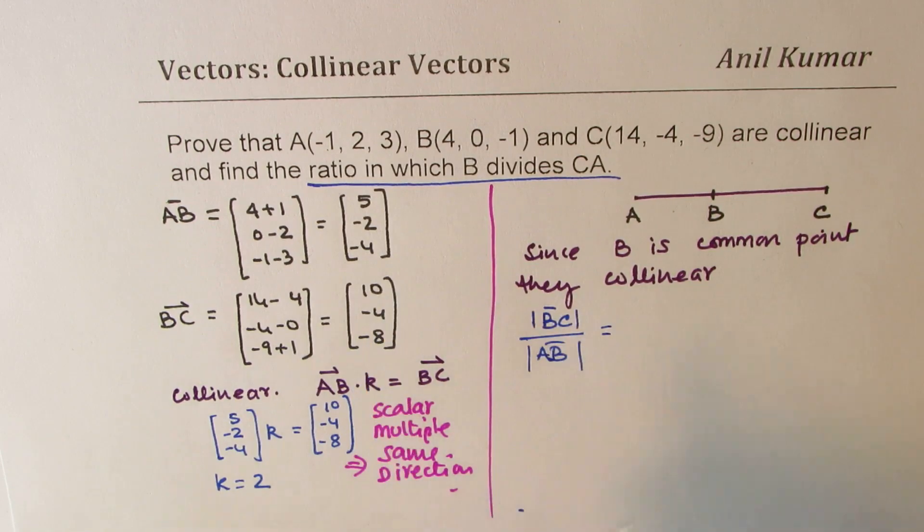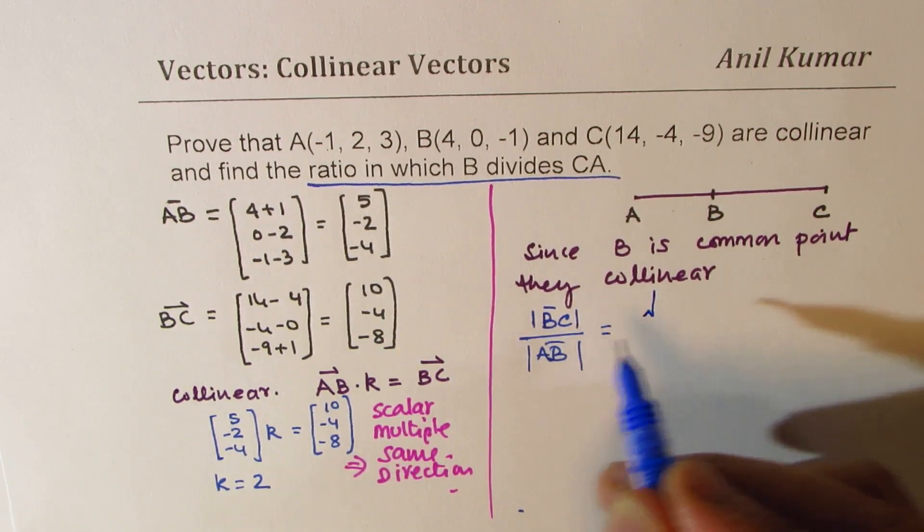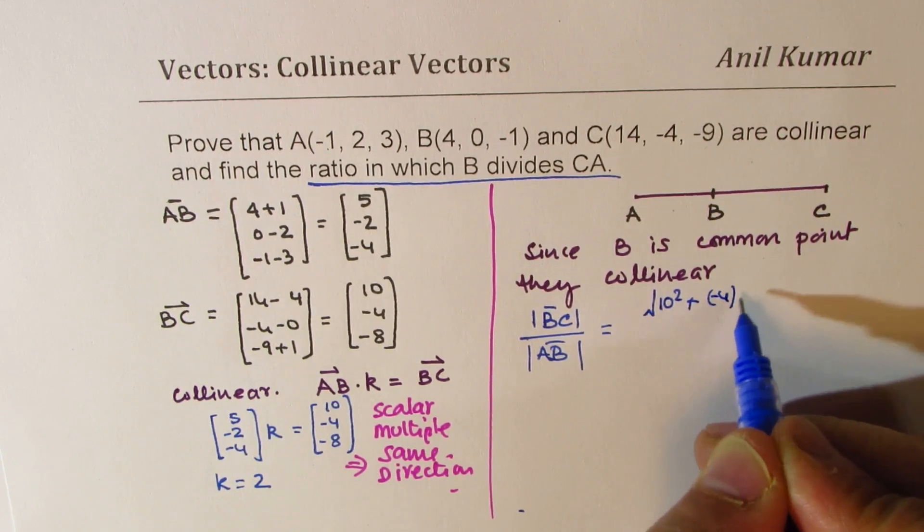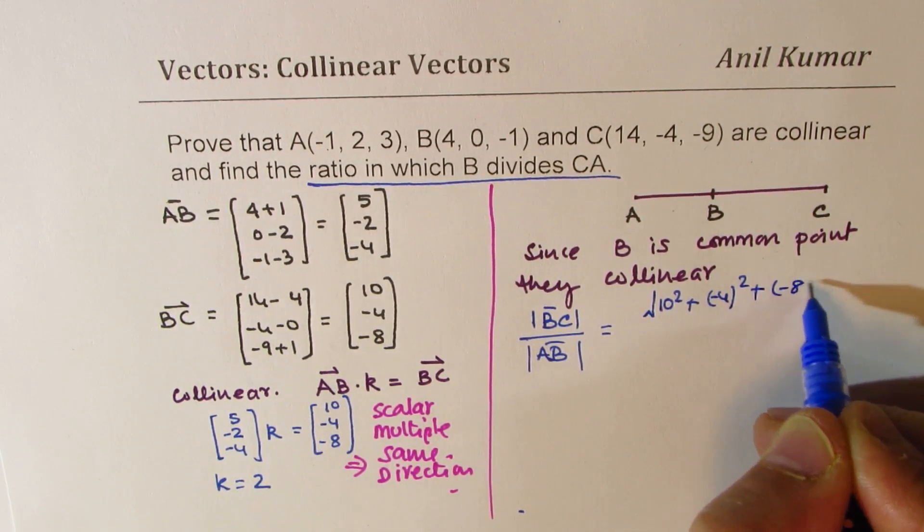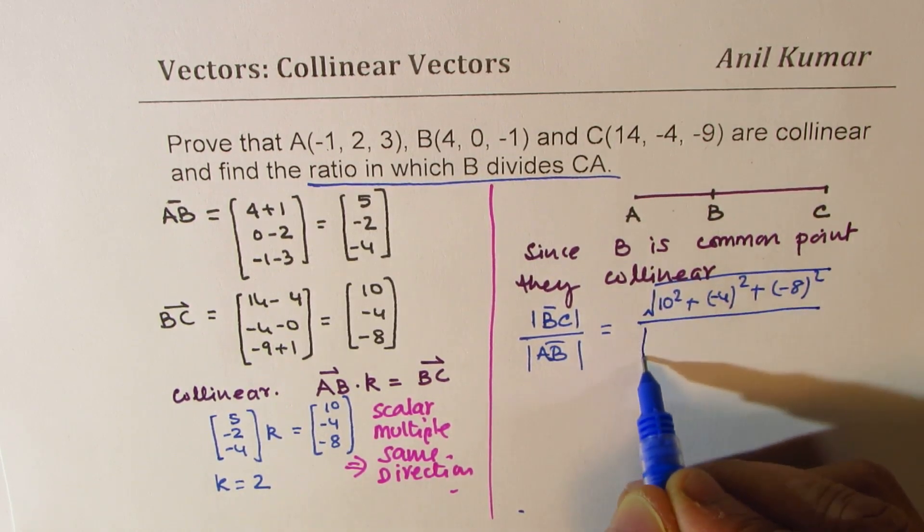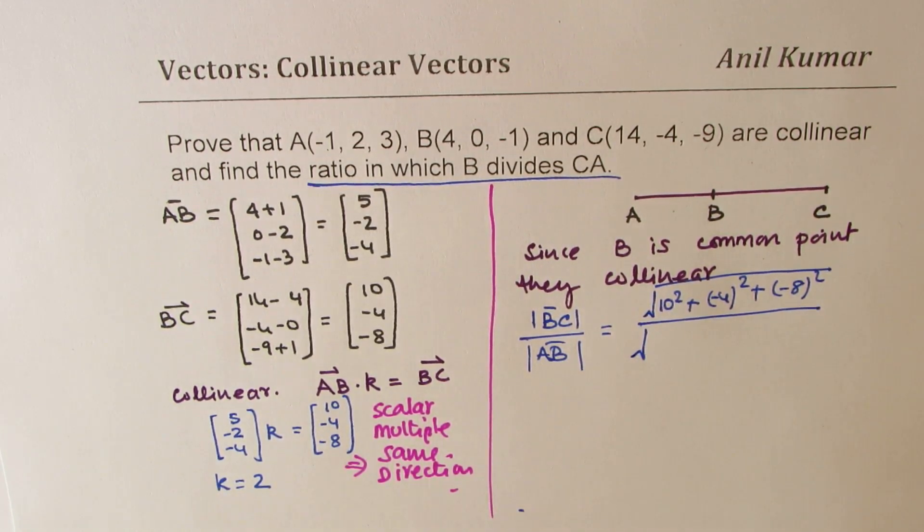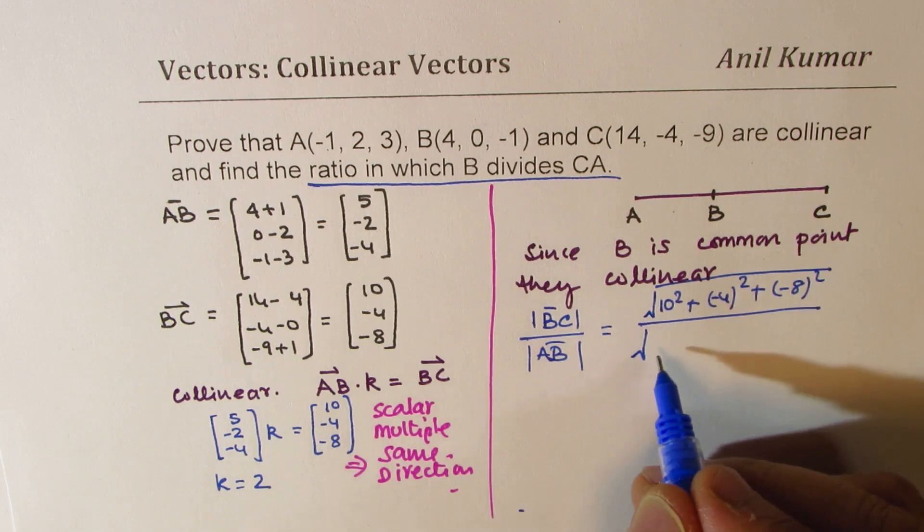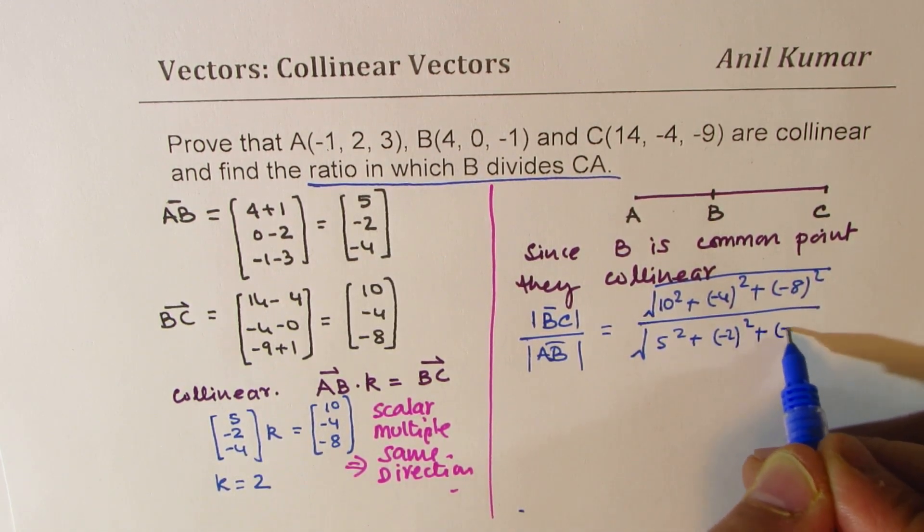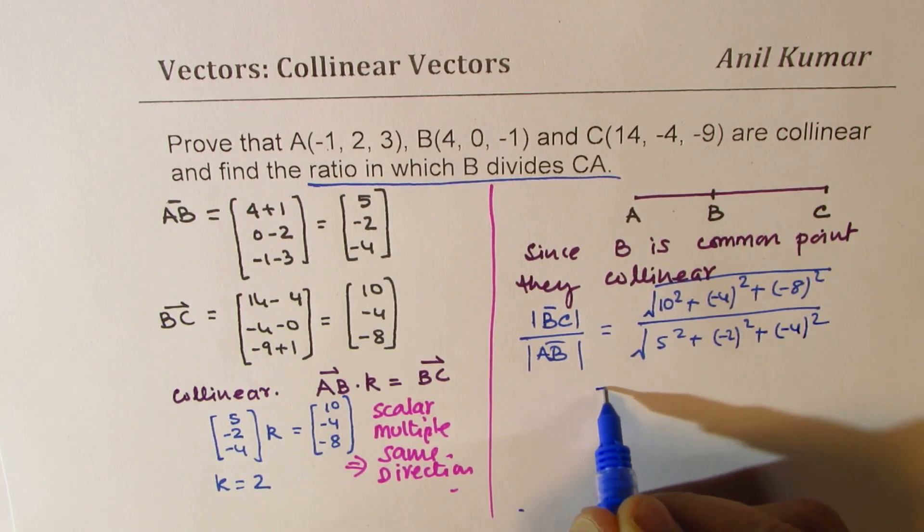Magnitude of BC is square root of 10 square plus -4 square plus -8 square. And magnitude of AB is 5 square plus -2 square plus -4 square.